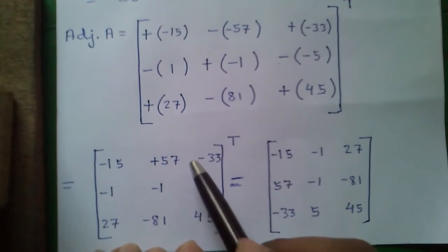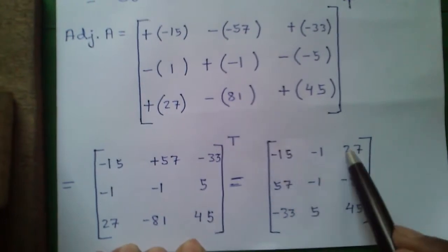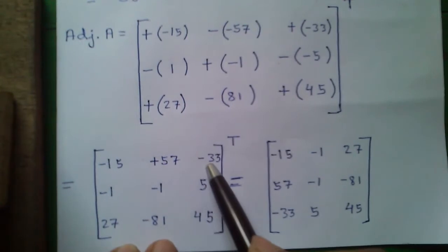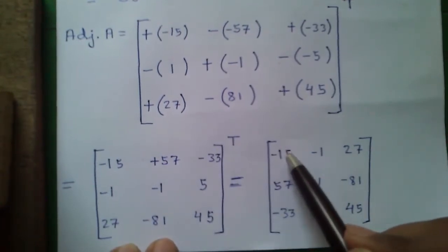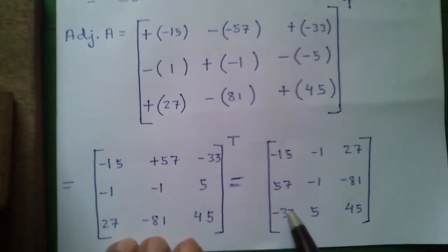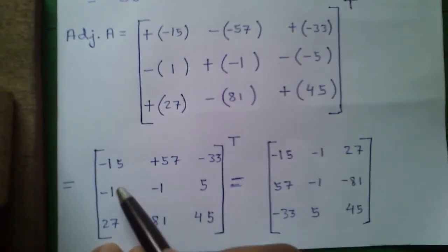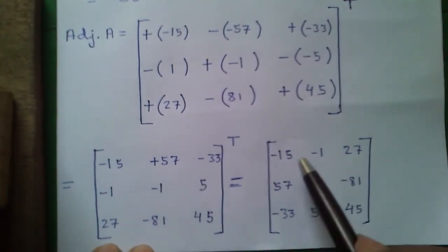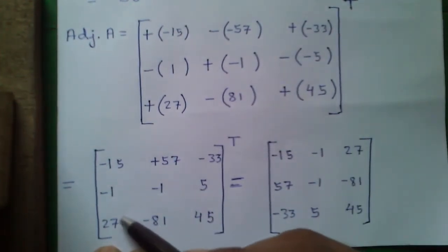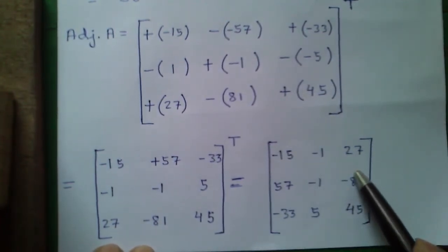To get the adjoint we have to take the transpose of this matrix. By transposing, we write the rows as columns. Row 1 (−15, +57, −33) becomes column 1; row 2 (−1, −1, +5) becomes column 2; row 3 (+27, −81, +45) becomes column 3. This is our actual adjoint matrix.